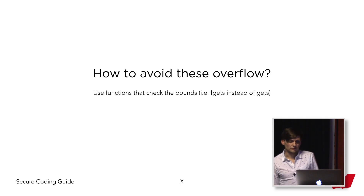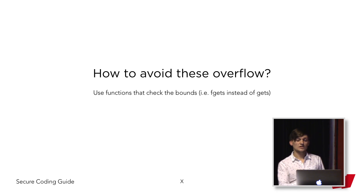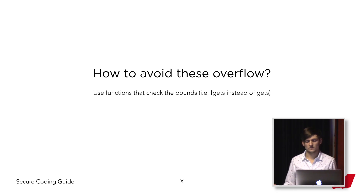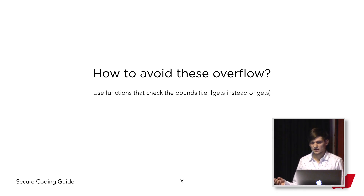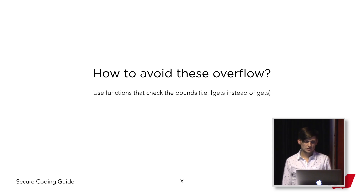How can we avoid this type of overflow? The first and most obvious way is that instead of using the gets function, we can use its alternative which checks the bounds. In this case, it's called fgets. For every function that is potentially unsafe, there is a safe version in the C language.